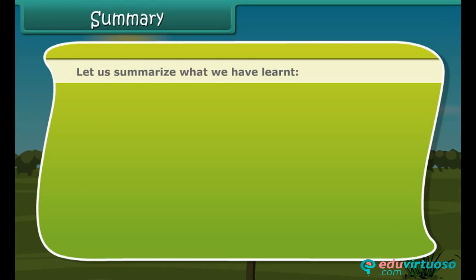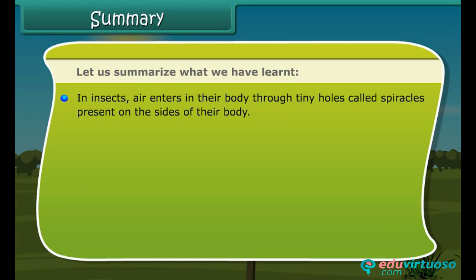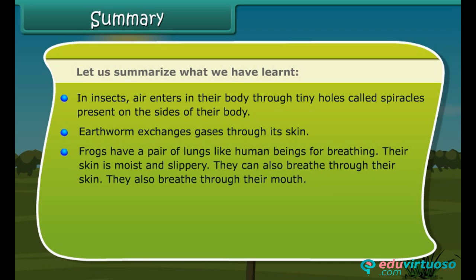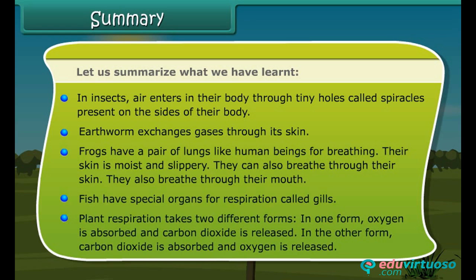Summary: In insects, air enters their body through tiny holes called spiracles present on the sides of their body. Earthworms exchange gas through their skin. Frogs have a pair of lungs like human beings for breathing; their skin is moist and slippery, so they can also breathe through their skin and through their mouth. Fish have special organs for respiration called gills. Plant respiration takes two different forms — in one form, oxygen is absorbed and carbon dioxide is released; in the other form, carbon dioxide is absorbed and oxygen is released.